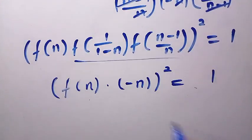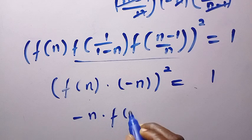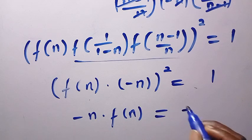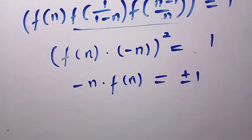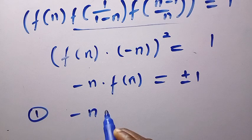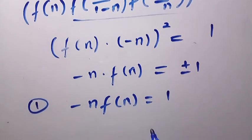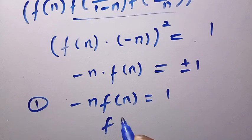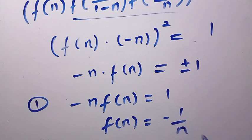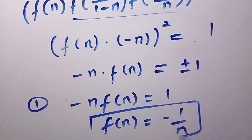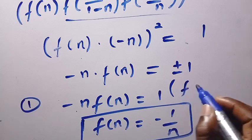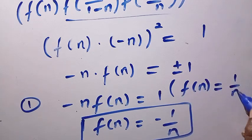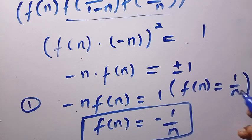Taking the square root of both sides gives us minus n times f(n) equals plus or minus 1. Taking the positive part, we have minus n times f(n) equals 1, so dividing both sides by minus n gives f(n) equals minus 1 over n. That is the first solution. Looking at the second part, for the minus 1 case, we see that f(n) equals 1 over n. So we have the negative and positive solutions.